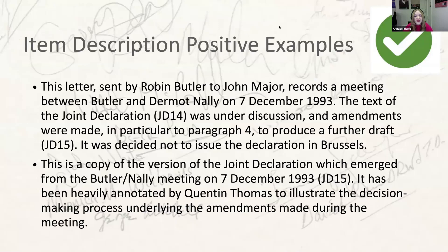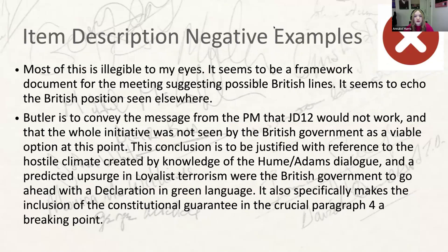I've included some concrete examples of the sort of thing you should be aiming for. These descriptions are written in full sentences using the correct tenses. They're fairly brief but still give the user important information about the contents of the document and any physical features — for example, the annotations in the second example. If a researcher was interested in a particular phase of the document's history, they would immediately know whether the documents were relevant to their search.